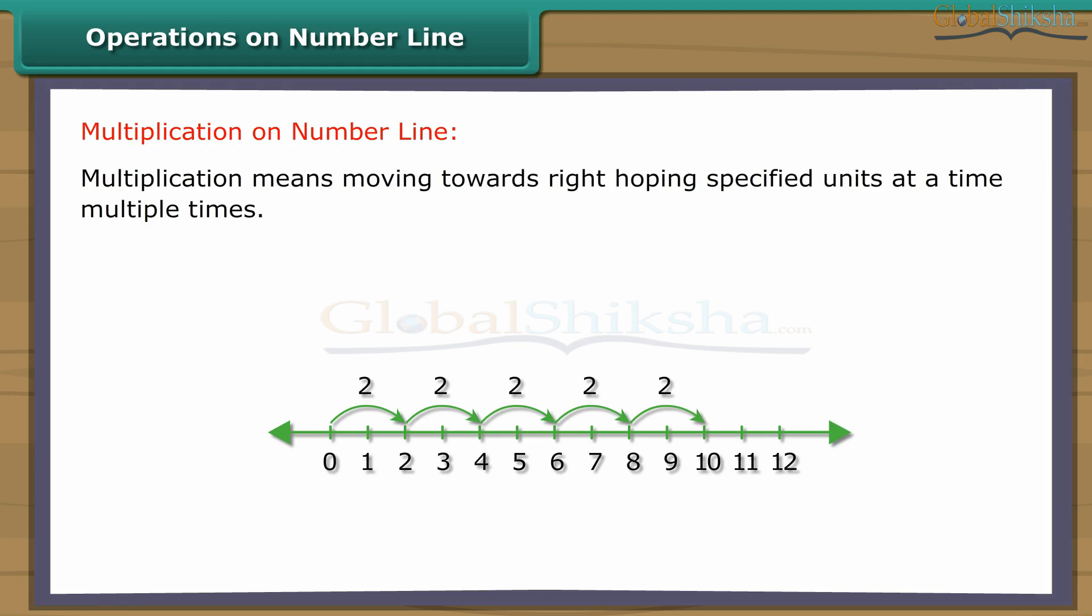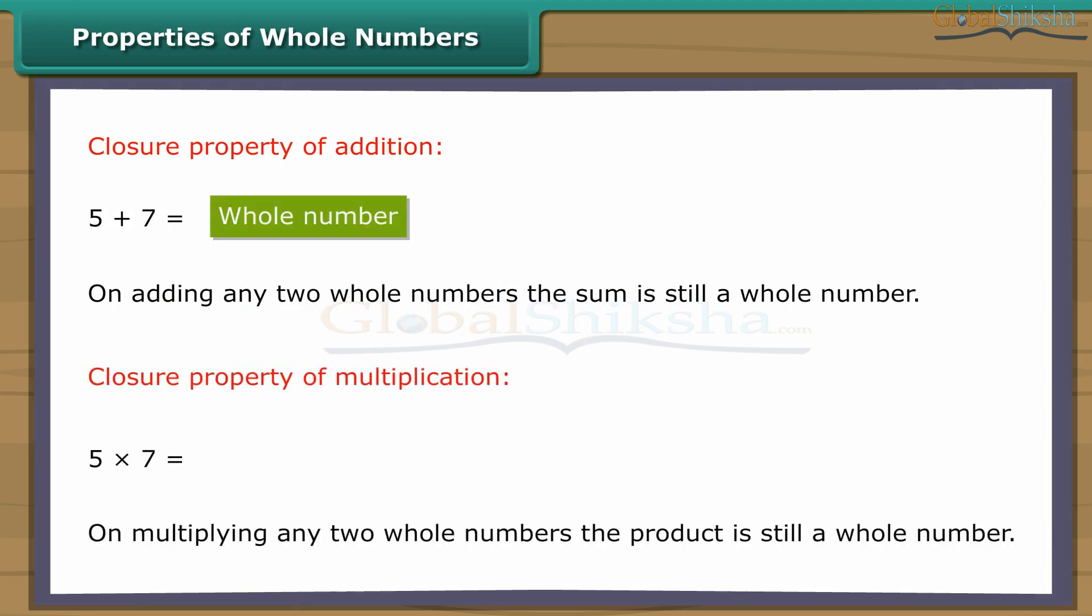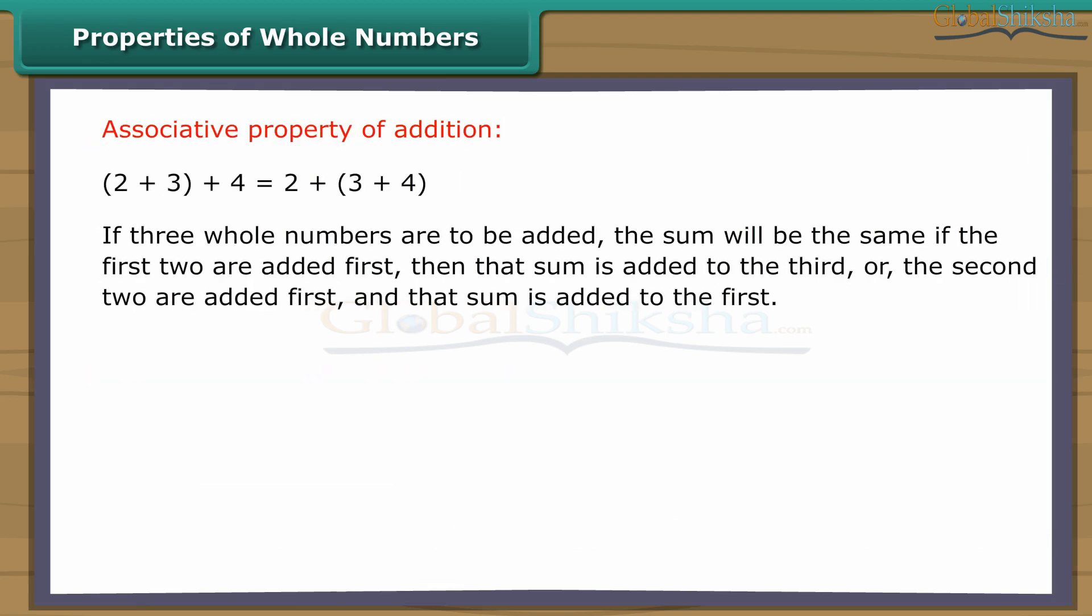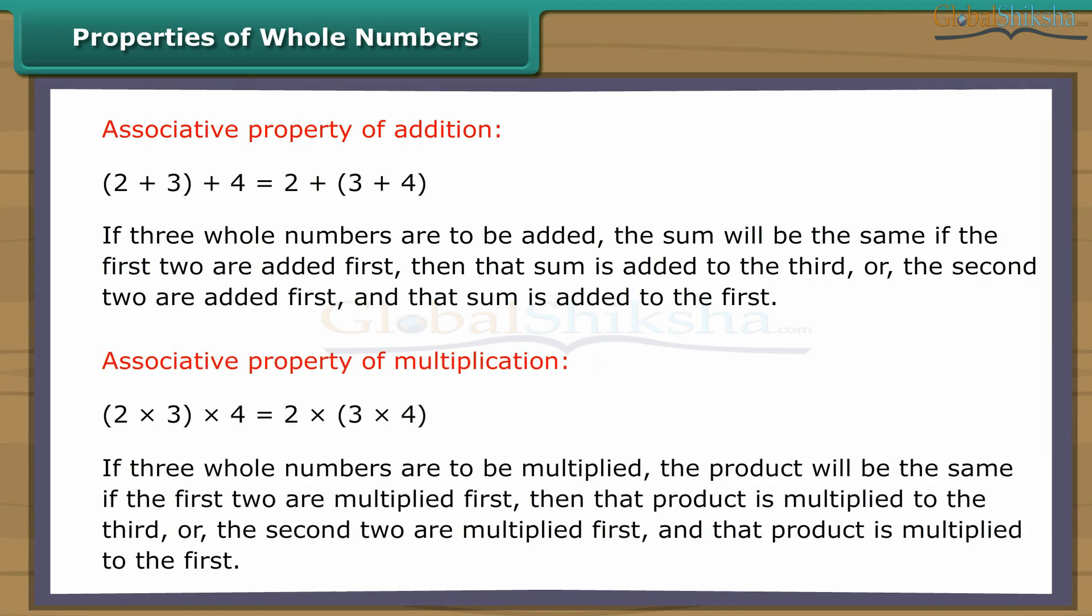Properties of whole numbers. On adding any two whole numbers, the sum is still a whole number. On multiplying any two whole numbers, the product is still a whole number. If three whole numbers are to be added, the sum will be the same if the first two are added first, then the sum is added to the third, or the second two are added first and that sum is added to the first. If three whole numbers are to be multiplied, the product will be the same if the first two are multiplied first, then the product is multiplied to the third, or the second two are multiplied first and that product is multiplied to the first.